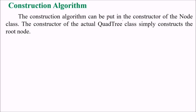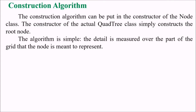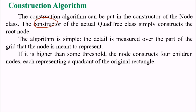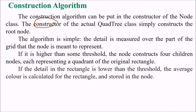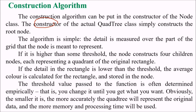The construction algorithm can be placed in the constructor of the node class itself. The quad tree class constructor simply constructs the root node. The algorithm is simple: the detail is measured over the part of the grid the node represents. If it is higher than some threshold, the node constructs four children nodes each representing a quadrant of the original rectangle. If lower than the threshold, the average color is calculated and stored in the node. The threshold value is often determined empirically — you change it until you get the desired result. A smaller threshold gives more accurate representation but uses more memory and processing time.